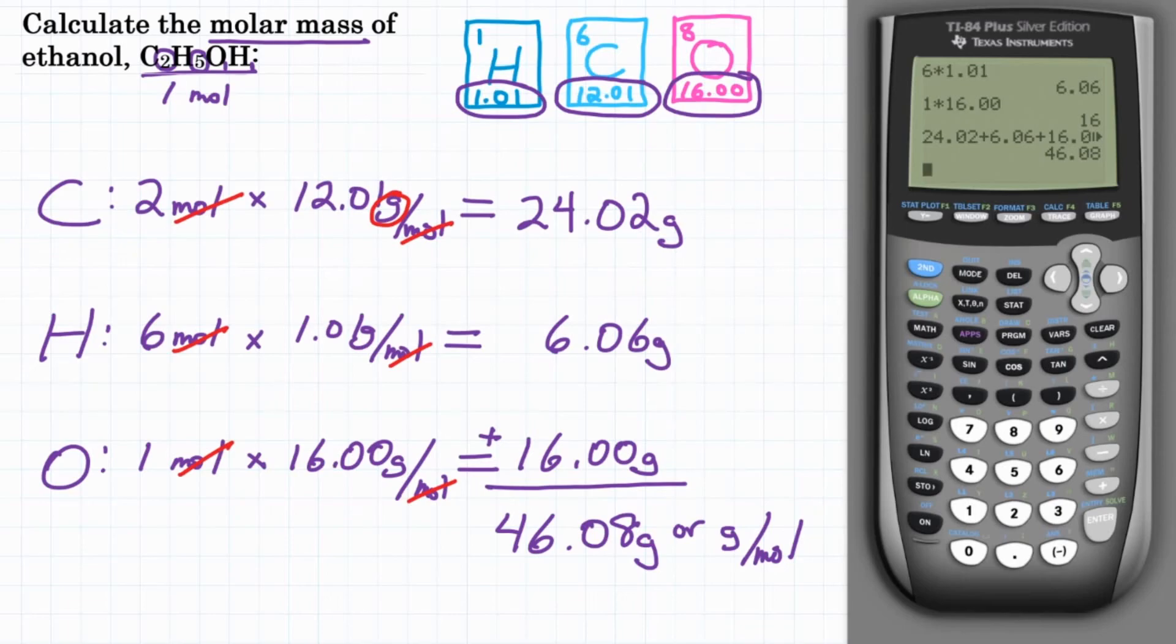So check with your teacher how they want you to write that. But anyways, final answer, calculate the molar mass of ethanol. That would be 46.08 grams or grams per mole.